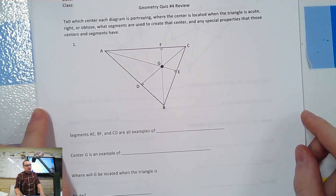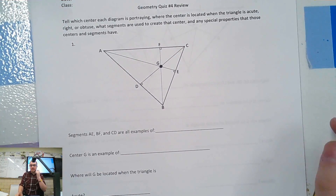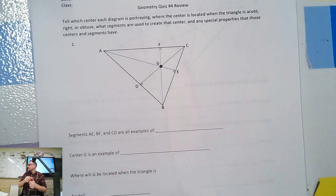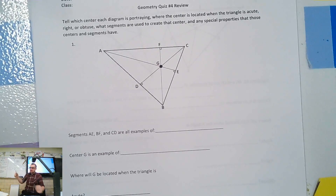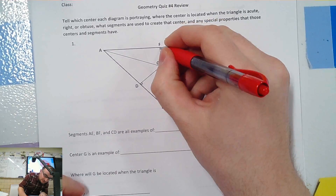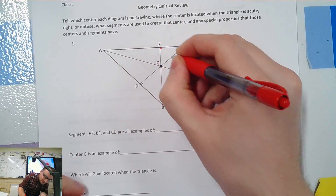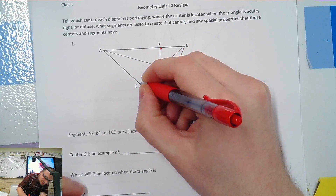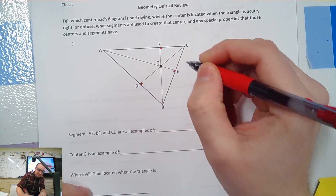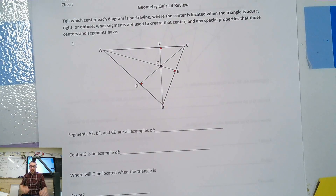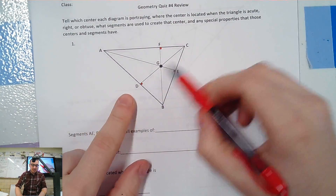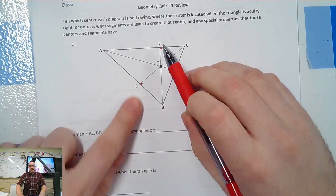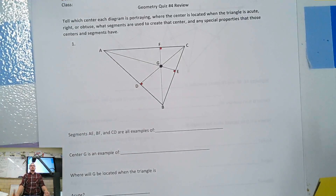All right, so here we are in the review. These are all right angles, so these segments D, C, A, E, and F, B — these are examples of what?